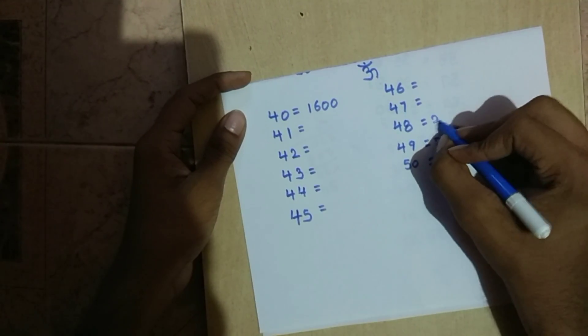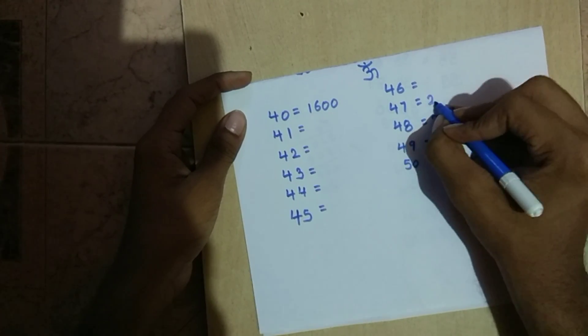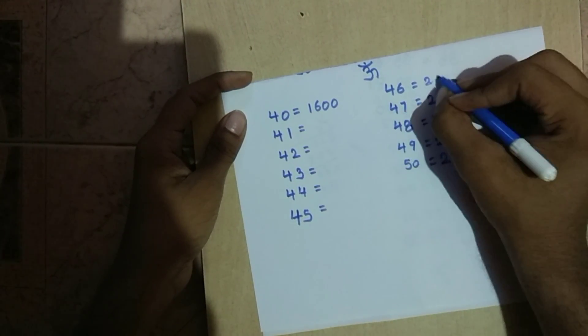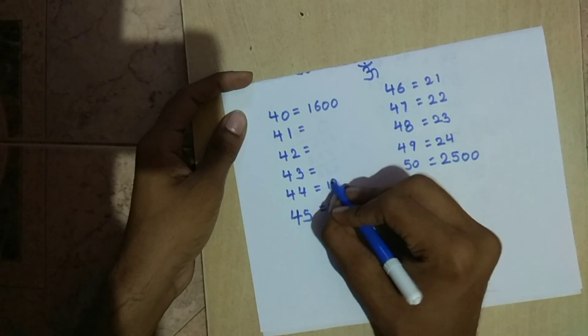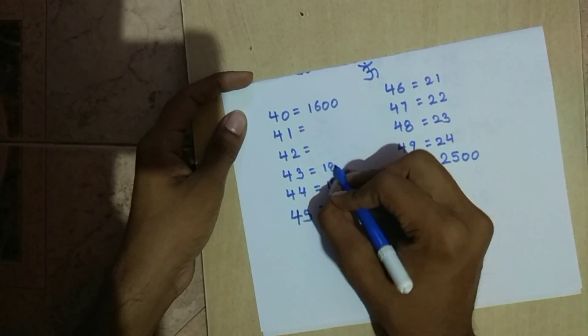The first two digits of the square will be the number which comes before the first two digits of the next number. So we shall go in descending order, and the first two digits of the square of 49 will be 24.